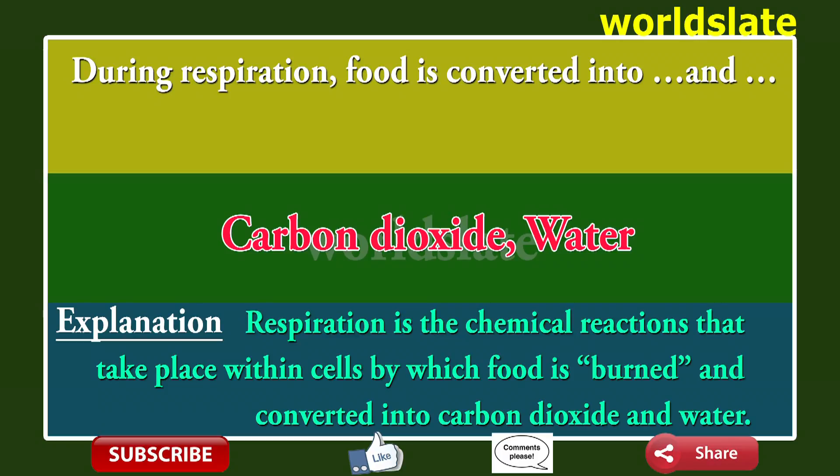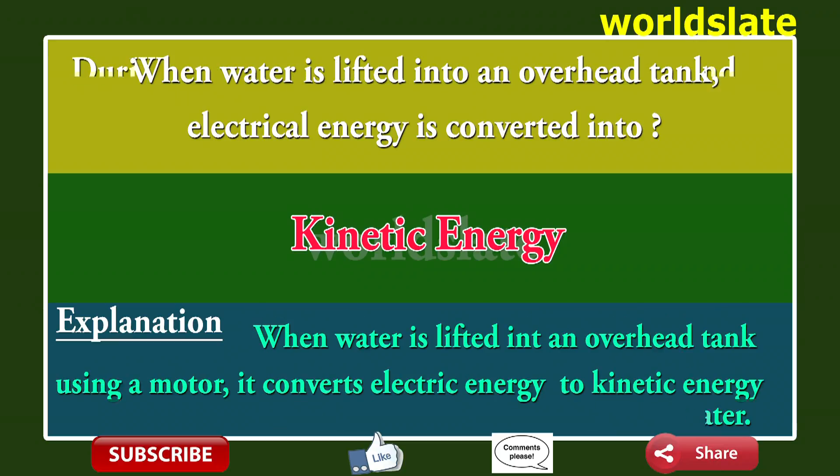Question: During respiration, food is converted into what? Answer: Carbon dioxide and water. Explanation: Respiration is the chemical reactions that take place within cells by which food is burned and converted into carbon dioxide and water.